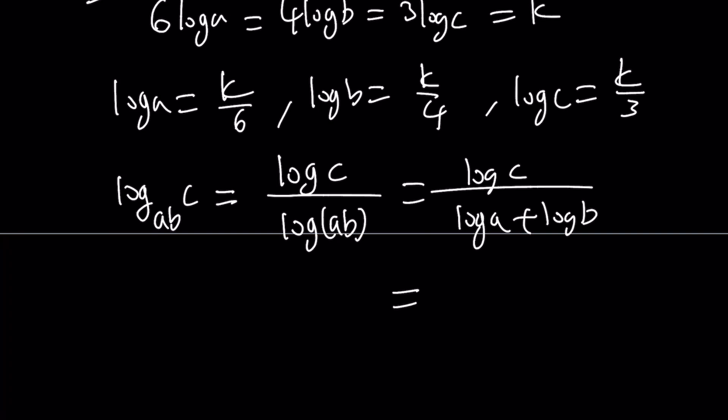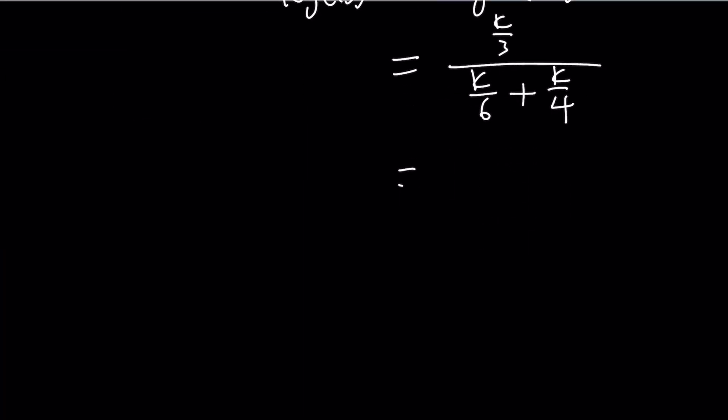Replace log C with K over 3, log A with K over 6, and log B with K over 4. If you make a common denominator and add these two fractions, you're going to get 5K over 12. And then K is going to cancel out. When you flip and multiply, 1 third multiply by 12 over 5 is going to give you 4 over 5. And that's going to be the answer.